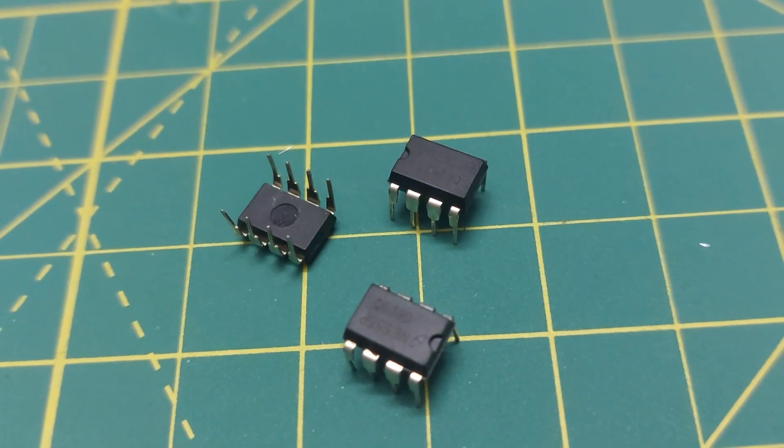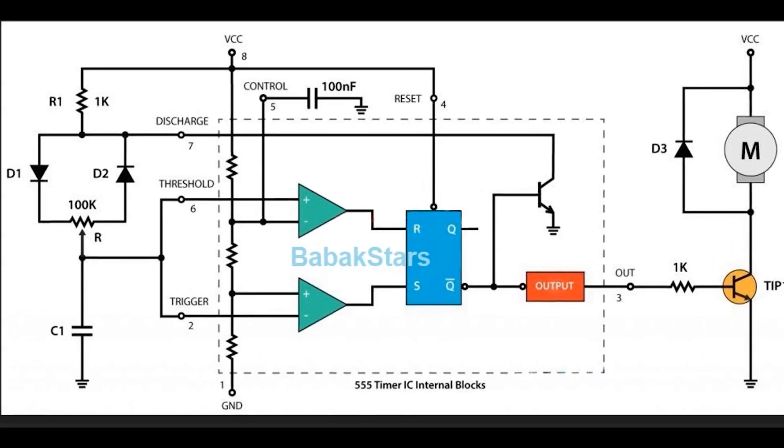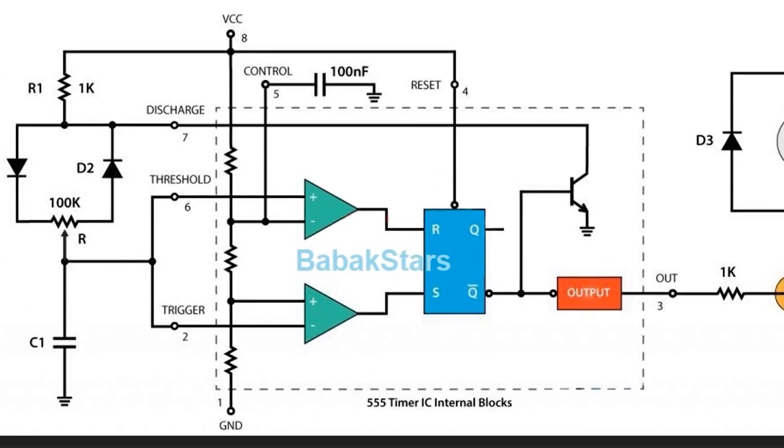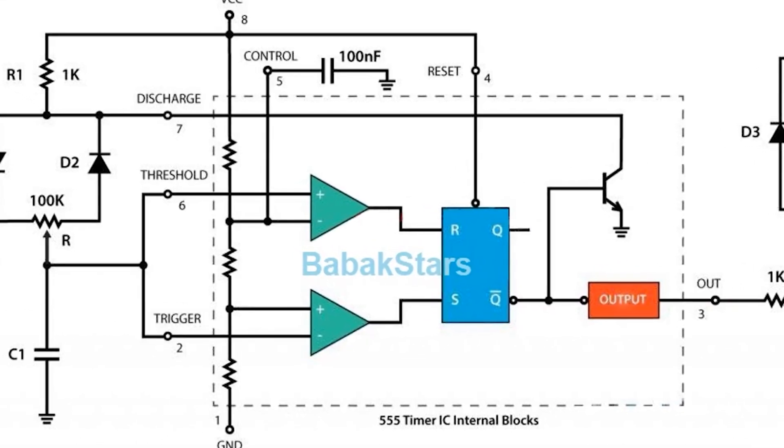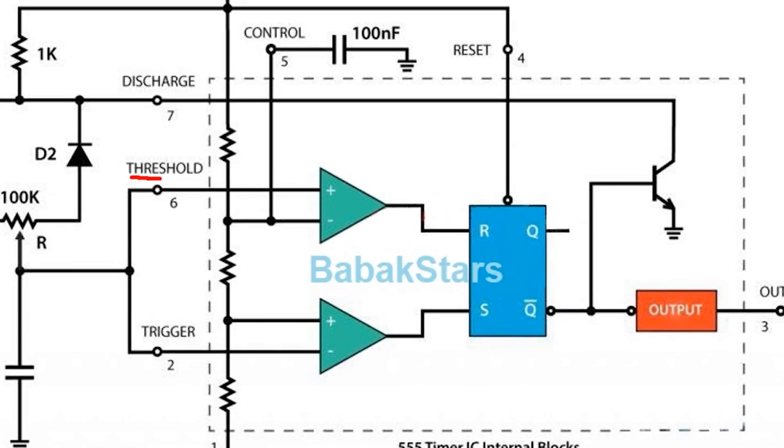First, let's take a look at the internal circuit of the 555 timer. As you can see, it contains two operational amplifiers, or comparators, used for voltage comparison. One is for the threshold voltage and the other for the trigger voltage, and in many cases, we connect these two inputs together. The outputs of the comparators go into a flip-flop, which produces a digital output, either 0 or 1.